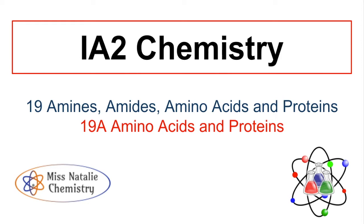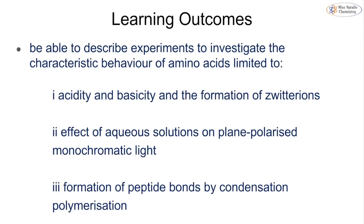This video is going to discuss the third and final part of topic 19 of the IA2 chemistry course, and we're going to be looking at amino acids and proteins. We're looking to be able to describe experiments to investigate the characteristic behaviour of amino acids, focusing mostly on their acidity and basicity, how they affect plane polarised light — talking about chirality — and also how we form the peptide bonds.